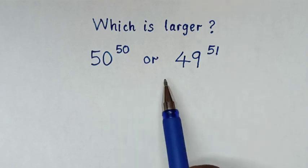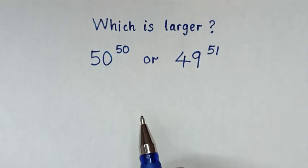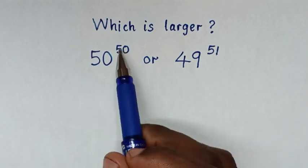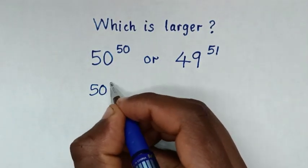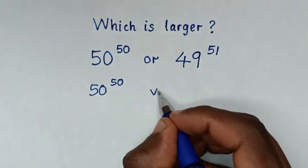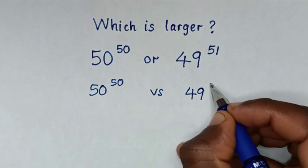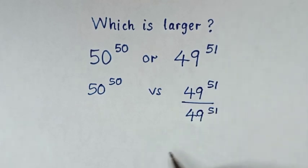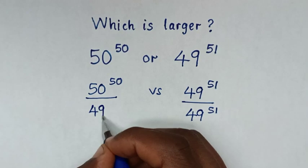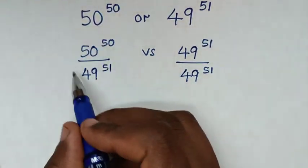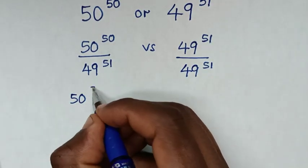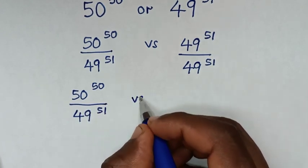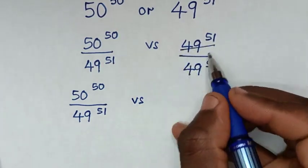To solve this math problem without using a calculator, in the first step we take this exponent and divide by the other exponent. So we divide 50 power 50 by 49 power 51 on both sides, so it will be 50 power 50 over 49 power 51. Dividing both sides cancels, leaving 1.